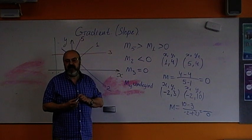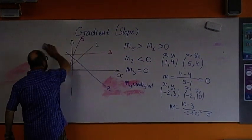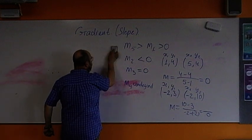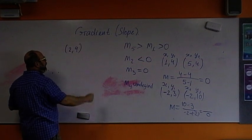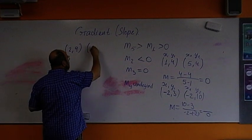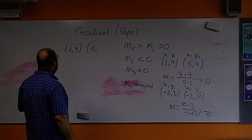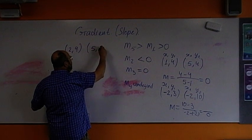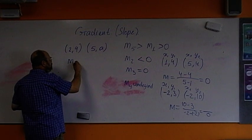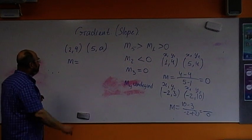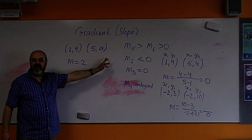Okay. So, today we'll be practicing with finding the gradient. The only one more example that I will do. If we have one point is two, nine. And second point is five and a. And we know that the gradient is two. How we can find what is a?